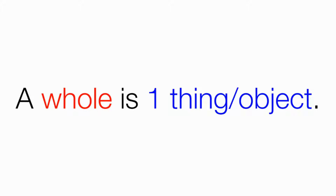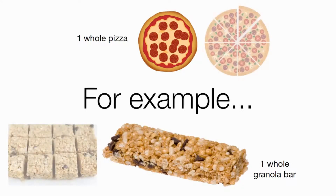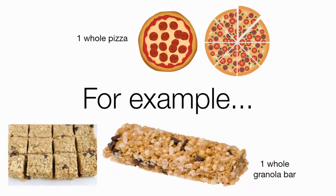A whole is just one thing, one object, or one collection. For example, one whole pizza, or one whole granola bar. You'll notice in math, especially in word problems, math books love to use food. The reason you'll see so many word problems with fractions that have food is because it's really easy to take a pizza and cut it into equal size pieces, or cut a granola bar into same size pieces. When we're talking about fractions, we're taking something and dividing it up into equal parts — all the pieces are the same size. It makes sense to do that with food.